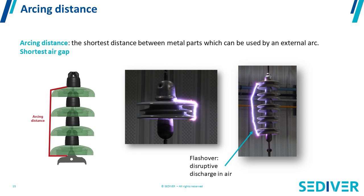Clearance is the distance between the conductor and the tower, which means you expect that if there is an arc, it goes from the conductor to the tower through air. On an insulator string, you have a parameter called arcing distance. This is the shortest distance an arc will follow going from the energized side to the ground side, without following the shape of the insulator. As you can see in the pictures, the arc goes from one side to the other of the insulator without following the profile. Several electrical characteristics of an insulator string are defined by the arcing distance — it is the shortest air gap the arc can take.